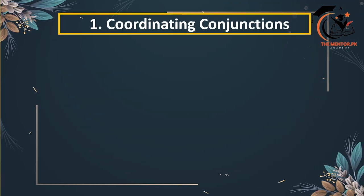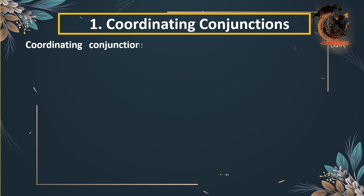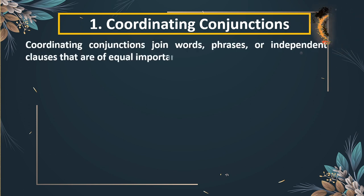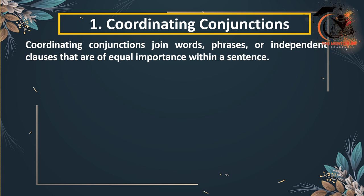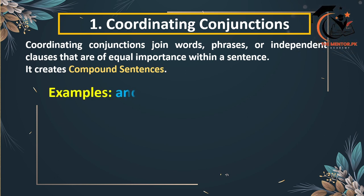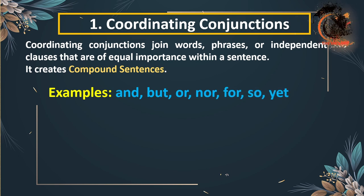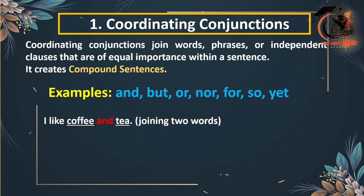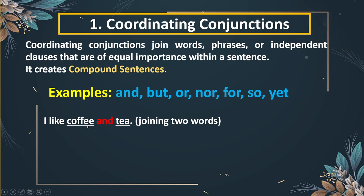The first type is coordinating conjunctions. Coordinating conjunctions join words, phrases, or independent clauses that are of equal importance within a sentence. Remember: coordinating conjunctions always create compound sentences. The most common examples are: and, but, or, nor, for, so, and yet. For example: 'I like coffee and tea.' Here, 'and' is a coordinating conjunction joining the two words coffee and tea.